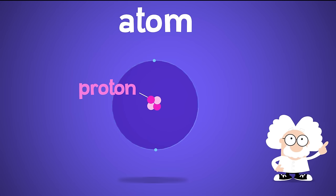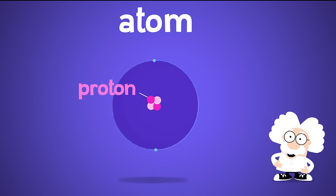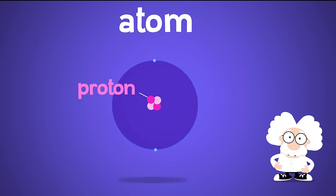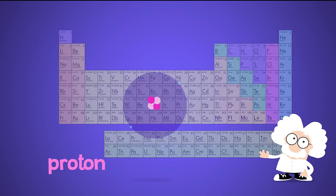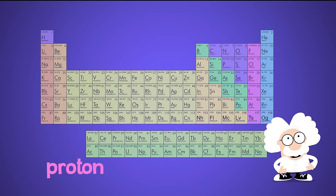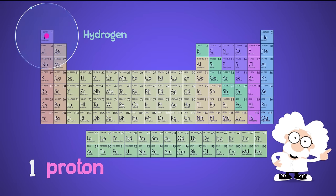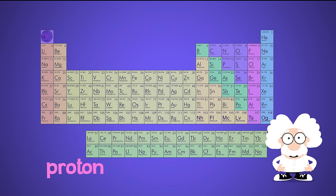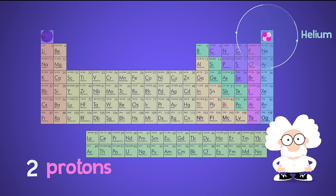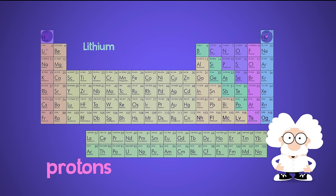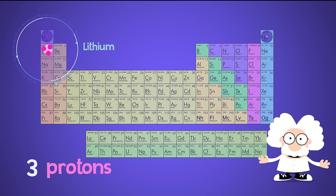For example, it's the number of protons inside an atom that makes each element different. If we look at the periodic table, the first element, hydrogen, has one proton. The second element, helium, has two protons. And the third element, lithium, has three protons.